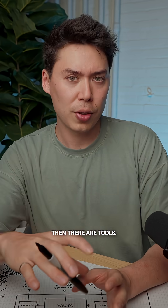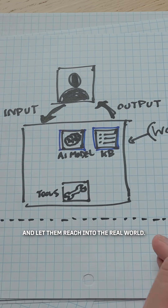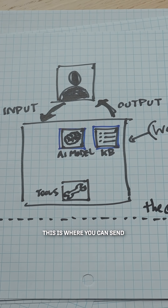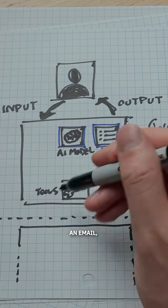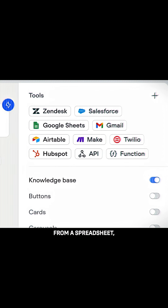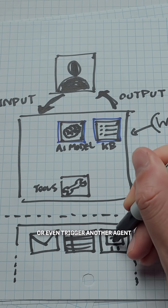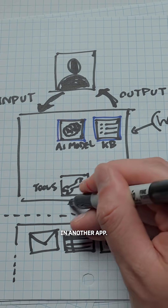Then there are tools. These give agents hands and let them reach into the real world. This is where you can send an email, get a piece of information from a spreadsheet, or even trigger another agent in another app.